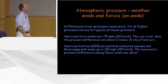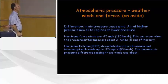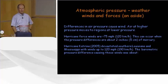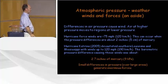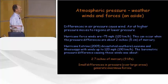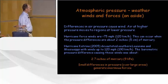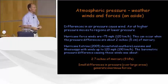Differences in air pressure cause wind; air at high pressure moves to regions of lower pressure. Hurricane force winds are greater than 75 miles per hour or 120 kilometers per hour, and this can occur when differences in pressure are about 2 inches or 5 centimeters of mercury. Hurricane Katrina in 2005 devastated southwestern Louisiana and Mississippi with winds up to 120 miles per hour, and the barometric pressure difference causing those winds was only 2.7 inches of mercury.